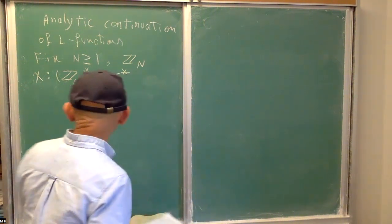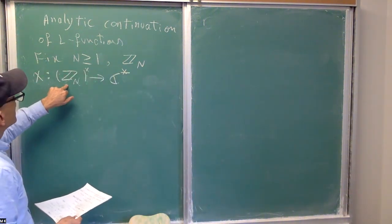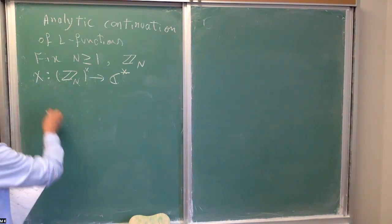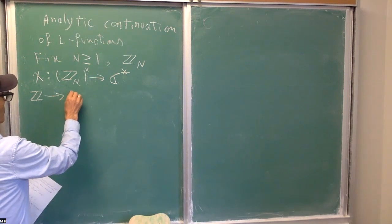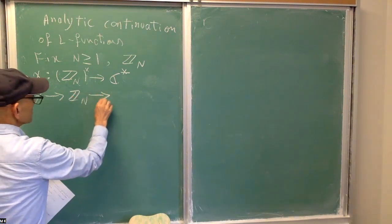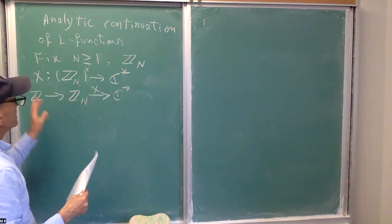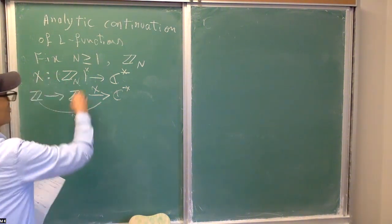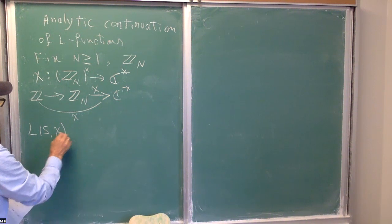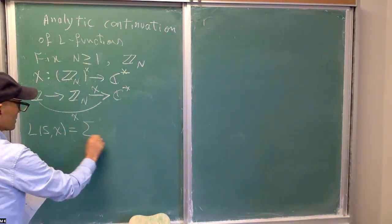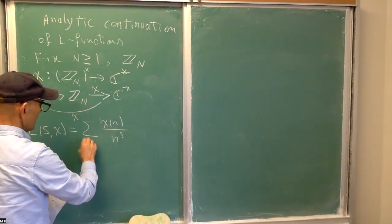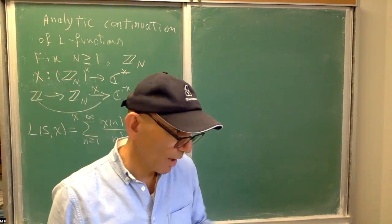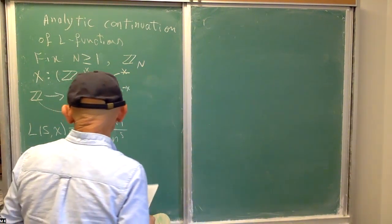We then extended this chi, first of all, to all of Z_n by defining it to be zero on the rest of Z_n. Then we composed it with the quotient map. So the Dirichlet L-function of this character, L(s, χ), character modulo n, was defined to be the sum of chi(n) over n^s from one to infinity.